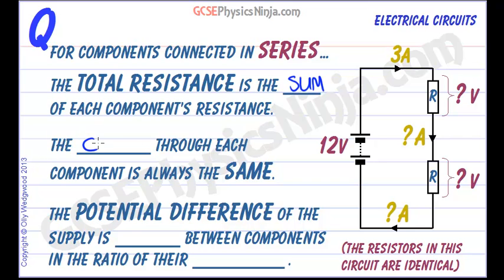The current flowing through each component is always the same in a series circuit. And the potential difference of the supply is shared between components in the ratio of their resistances.